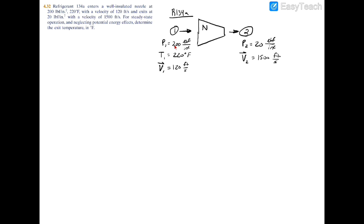That makes sense — at the inlet of the nozzle you have high pressure and low velocity, and at the exit you lose pressure down to 20 psi but the velocity shoots way up to 1500 feet per second. Also, we know this nozzle is well insulated, which means we have no heat transfer, so Q-dot equals zero. To find the exit temperature T2 in degrees Fahrenheit, we need another thermodynamic property of the R134a at state 2.